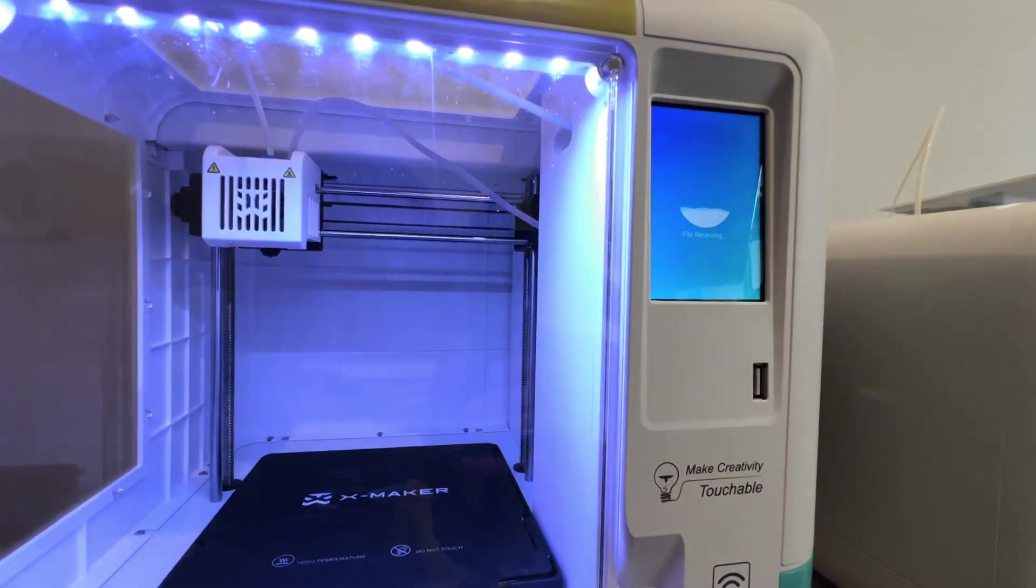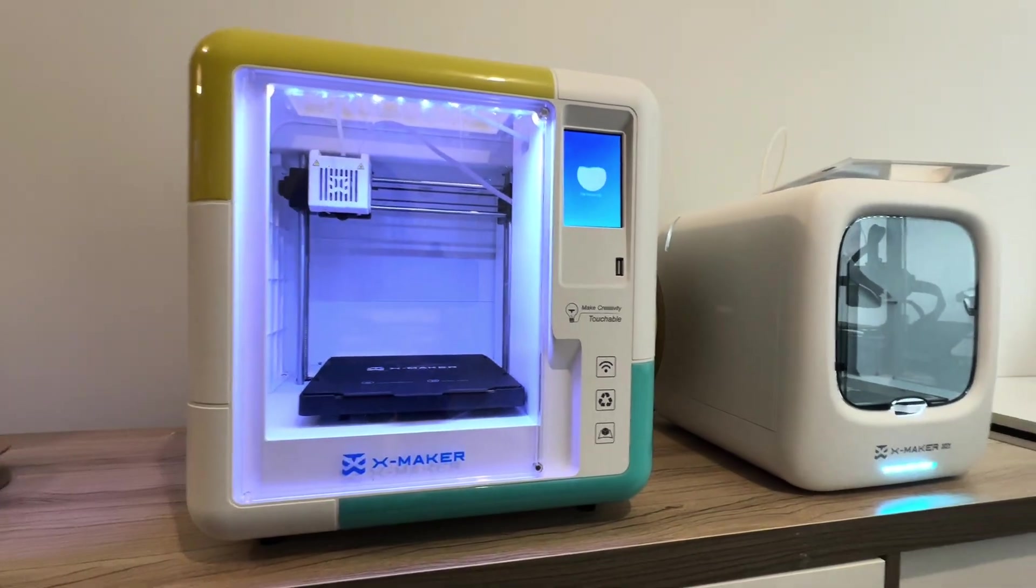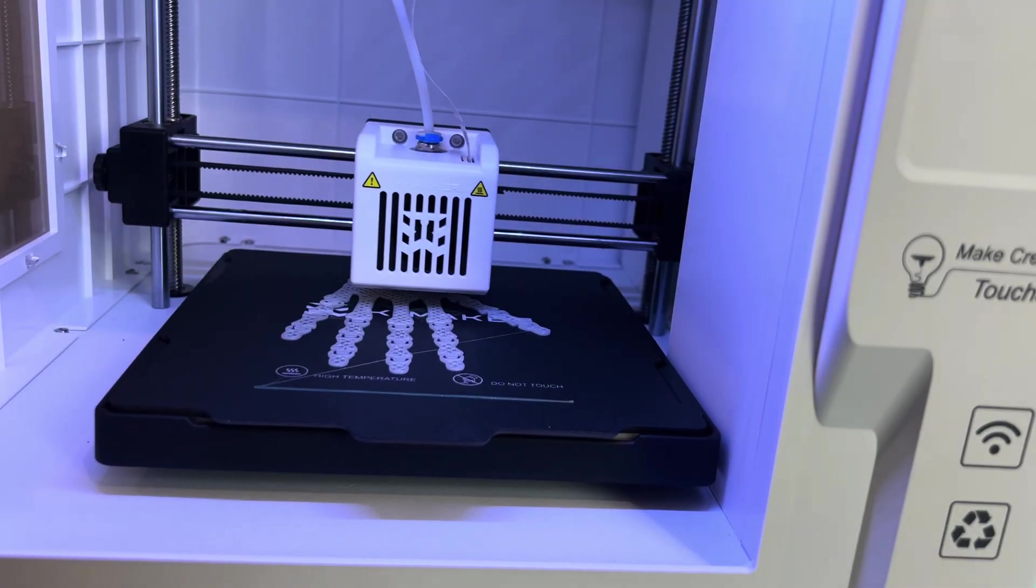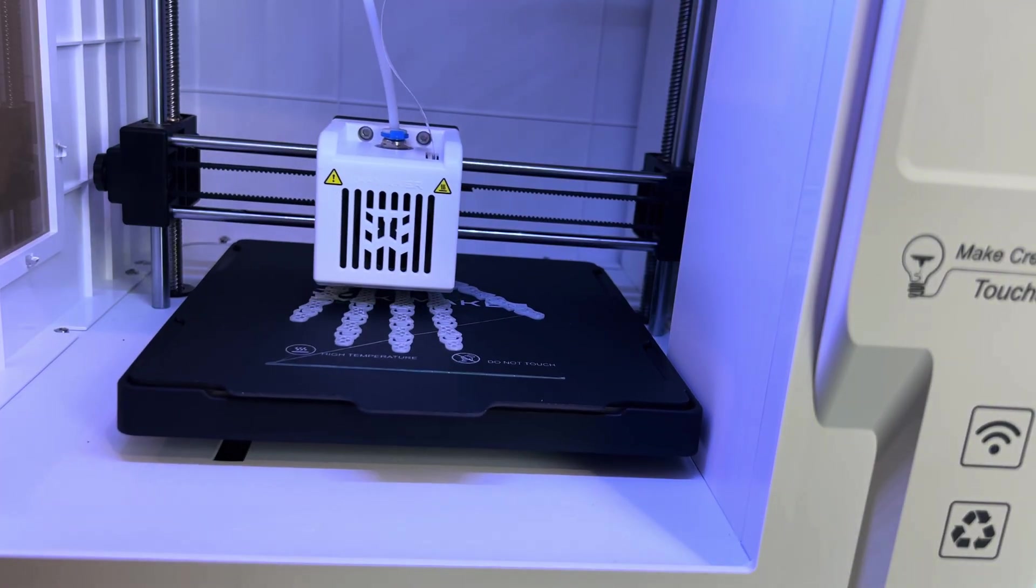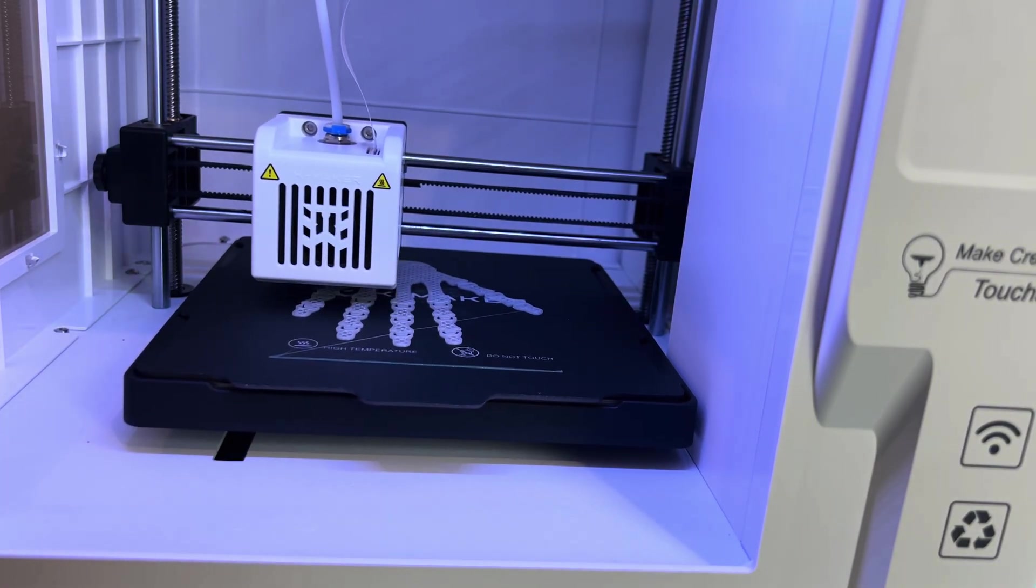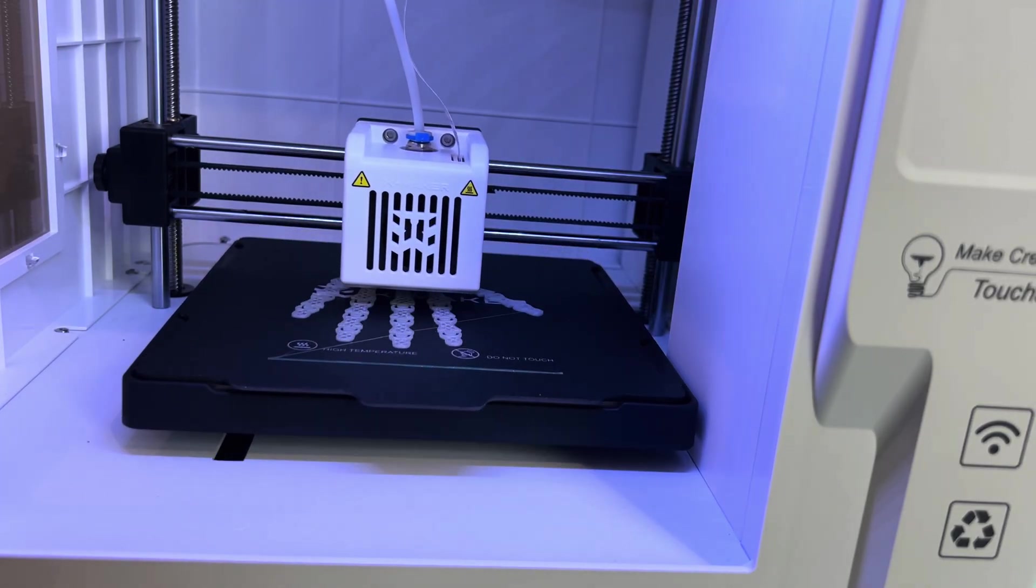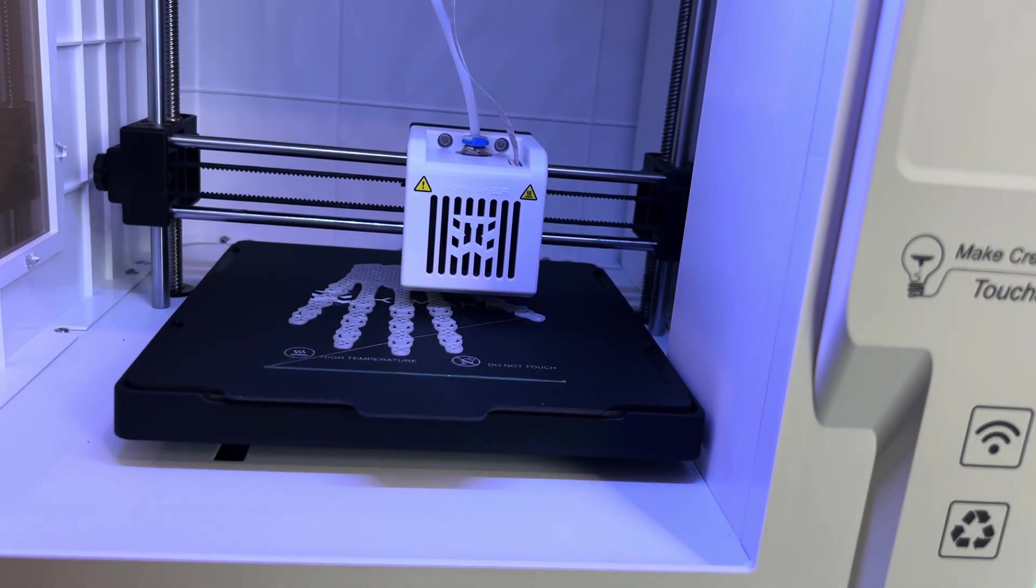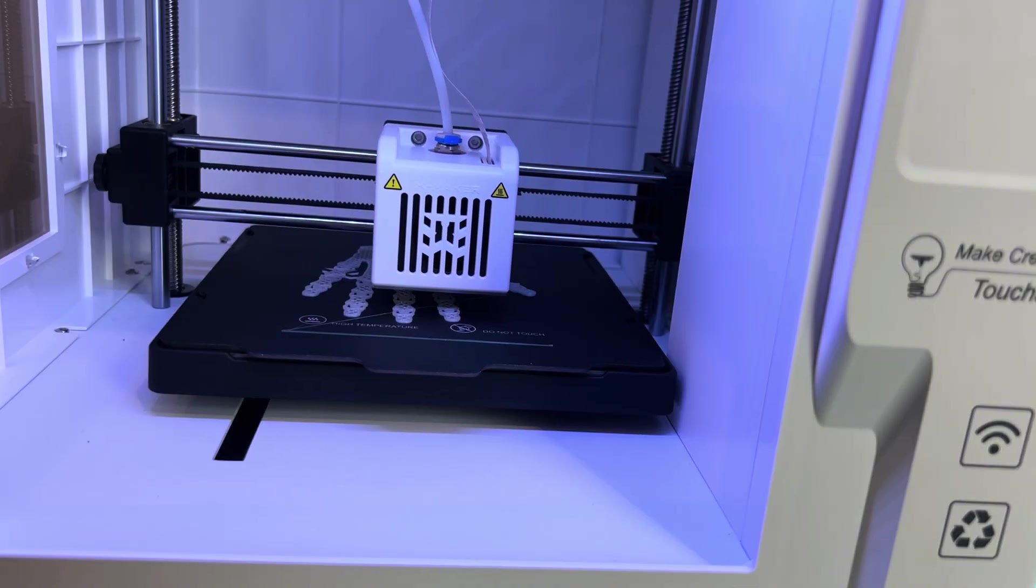You can see that the file is now being received and here we go. The printer works by printing layer by layer, little lines of plastic to build up to create that skull hand. This print's going to take about three and a half hours on the AOC'd Xmaker.